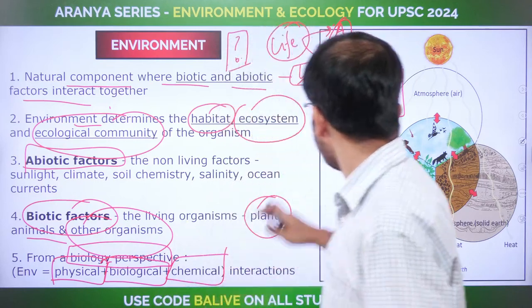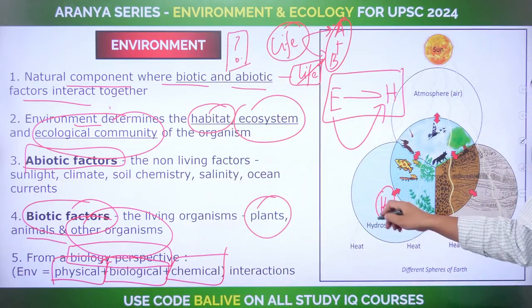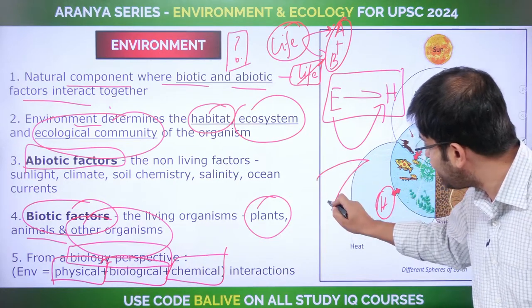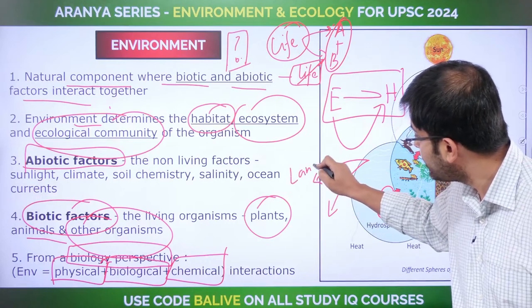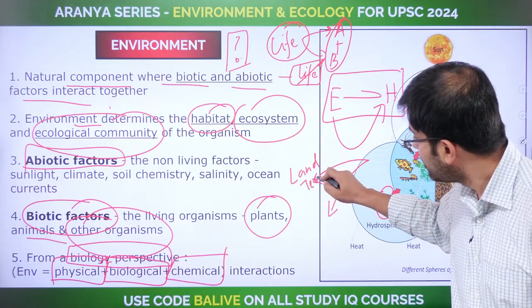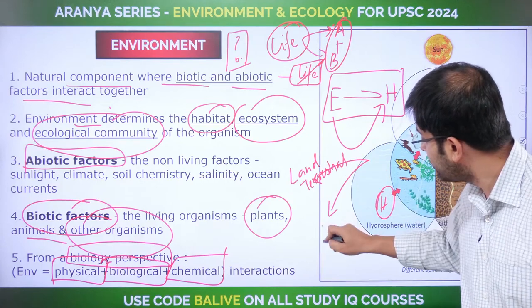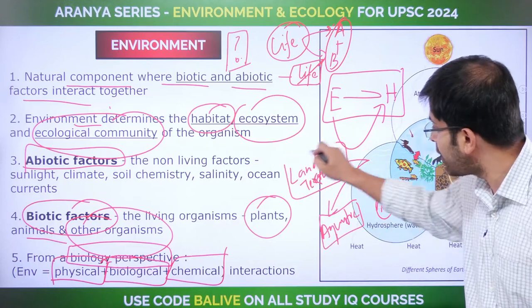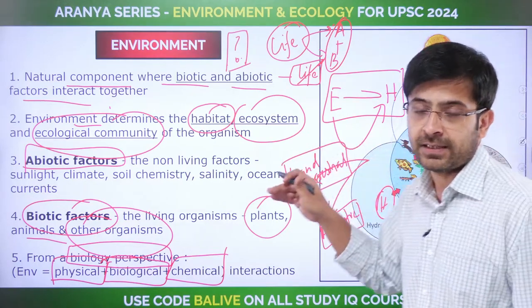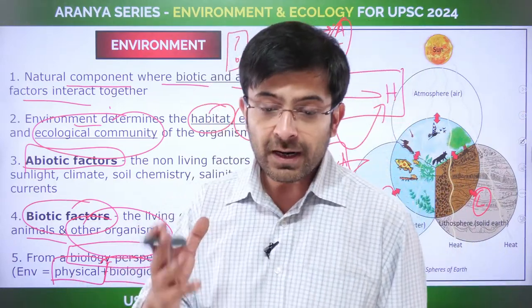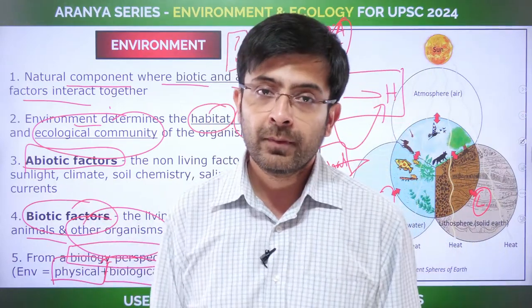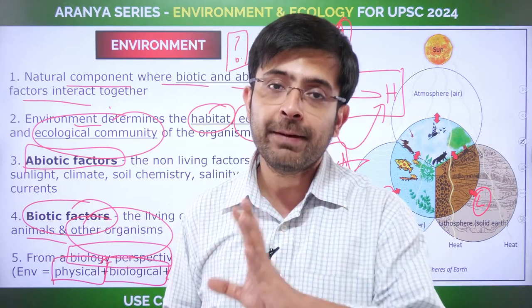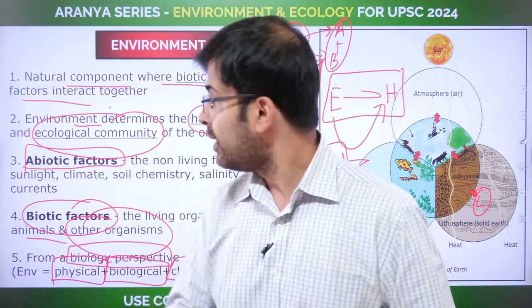You know what hydrosphere and lithosphere are. Two primary types of environment emerge: land-based or terrestrial, and aquatic. Wherever life exists, that becomes the biosphere. So the basics are: what is environment, and what is the creation of life dependent on — both biotic and abiotic factors.